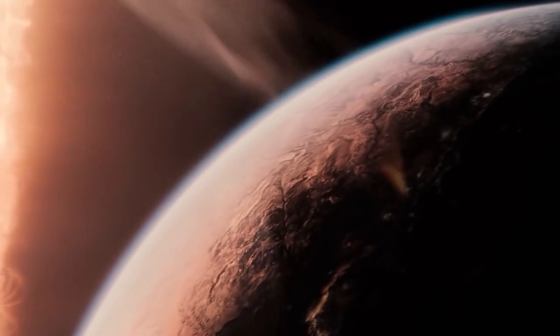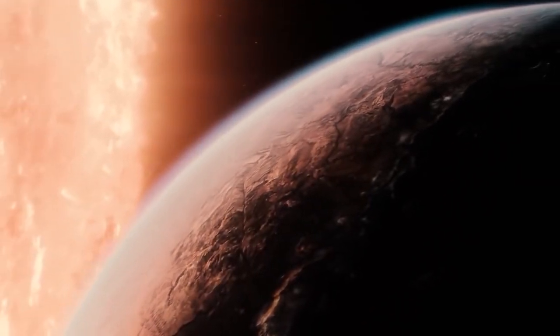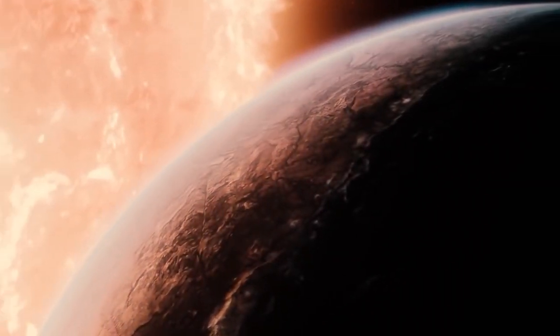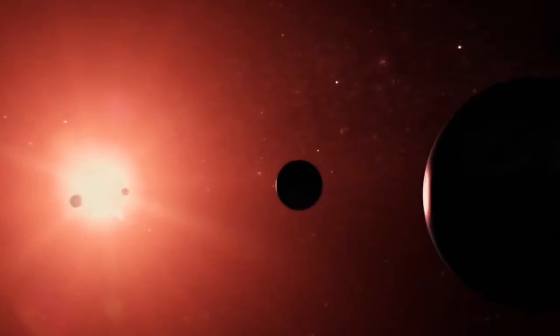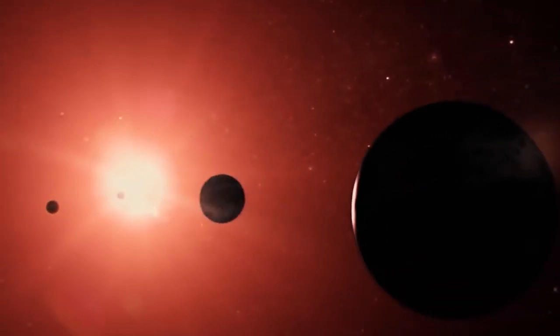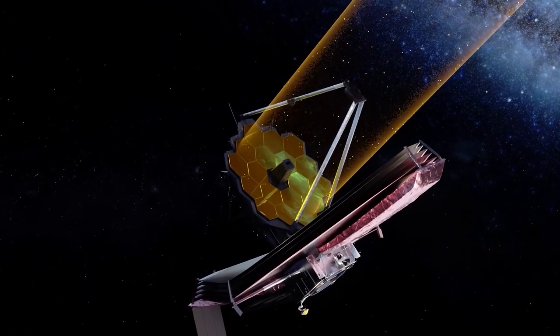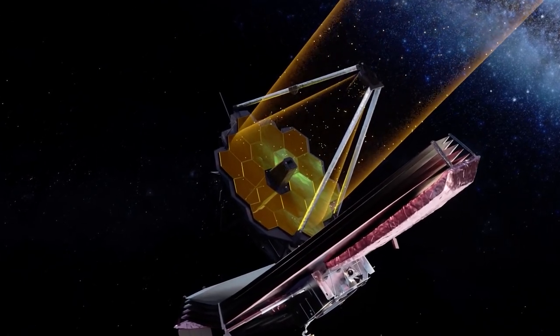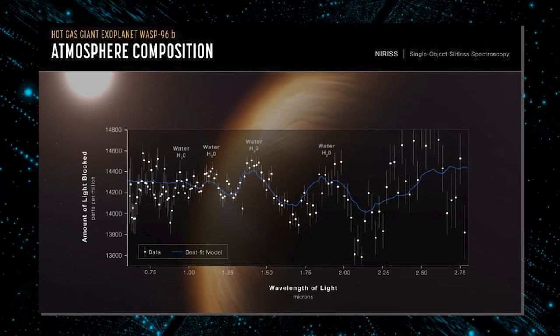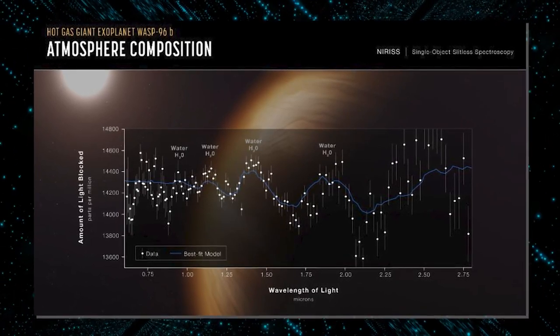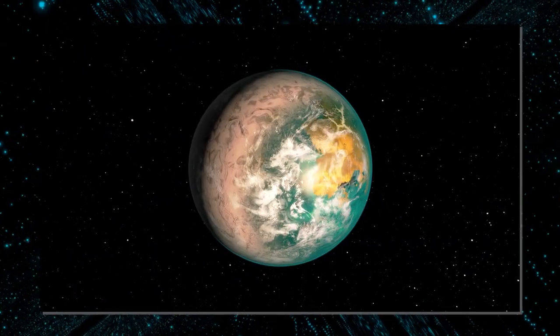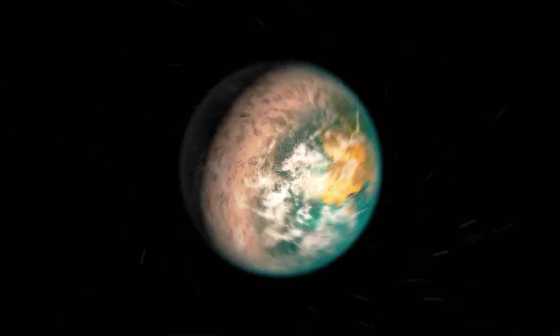While the light curve confirms properties of the planet that had already been determined from other observations by earlier telescopes like the existence, size, and orbit of the planet, Webb's transmission spectrum reveals previously hidden details of the atmosphere like the unambiguous signature of water, indications of haze, and evidence of clouds that were thought not to exist previously.